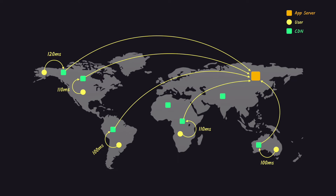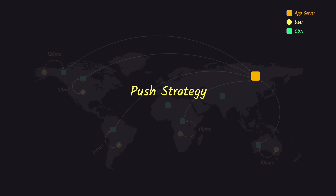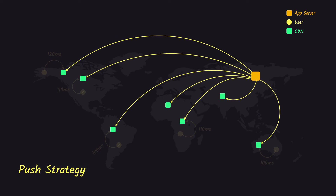How does content get to the CDNs? There are two strategies. The first is the push strategy. In the push strategy, when we deploy our application we push the content to all CDN servers. When the client tries to use the website it sends the request to the CDN, finds the content there, and gets a response without ever going to the origin server.